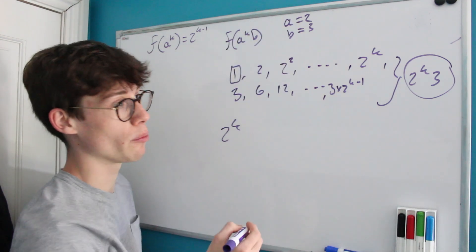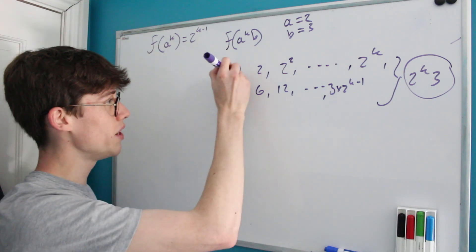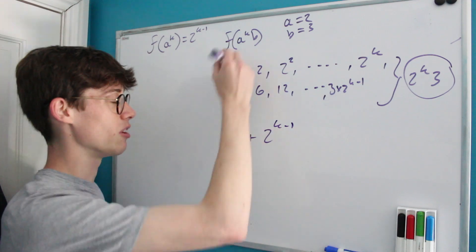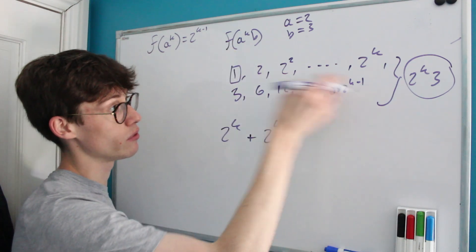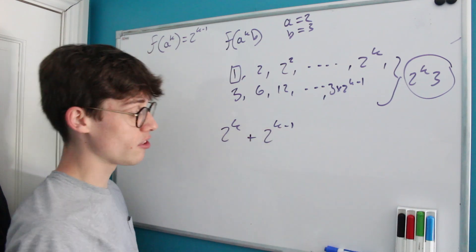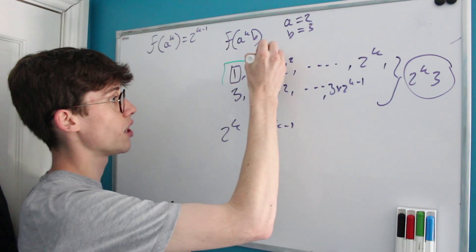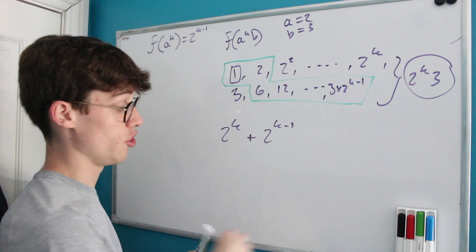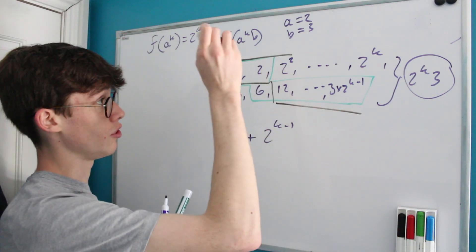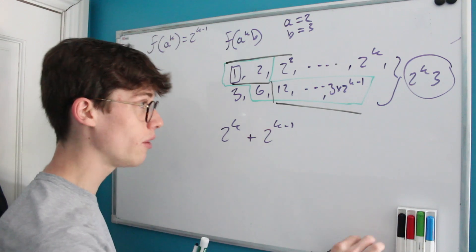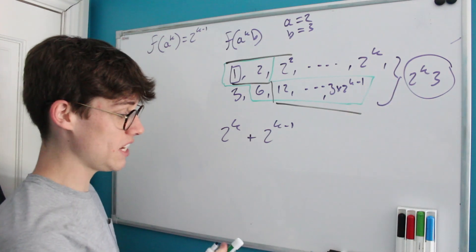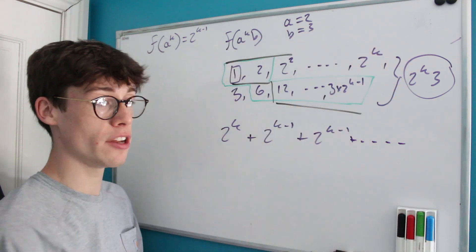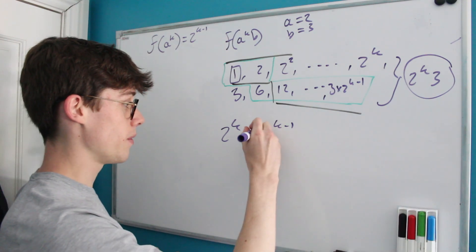The possible penultimate terms involving our prime factor b start at 3 · 2^(k−1) — one fewer term than in the top row. We can choose any subset of {3, 6, 12, ..., 3·2^(k−1)}, giving 2^(k−1) additional possibilities. We don't have to stop there either — we can take any number of steps along the pure-powers-of-2 row before switching to the multiples-of-3 row, each time adding 2^(k−1) possibilities. This can happen k times.